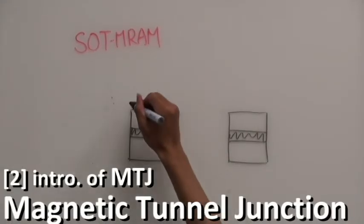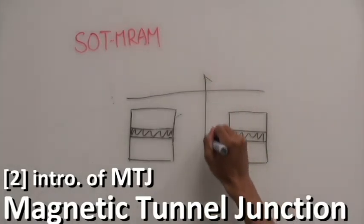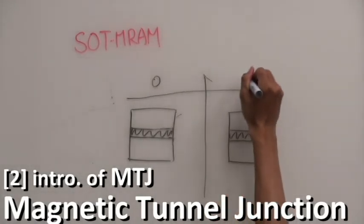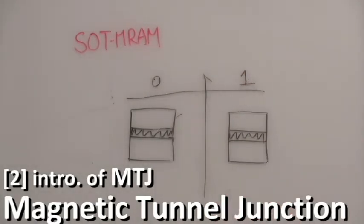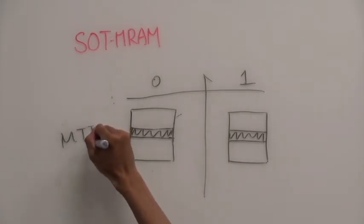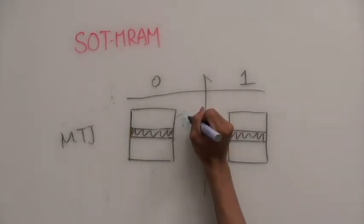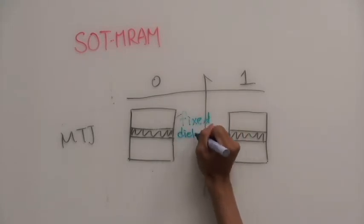To understand the working principle of MRAM, we have to know its storage element, magnetic tunnel junction first. The MTJ is composed of a fixed magnetic layer, a thin dielectric tunnel barrier, and a free magnetic layer.